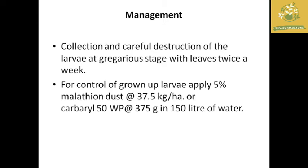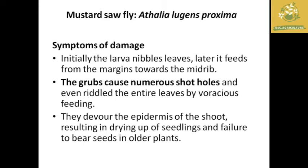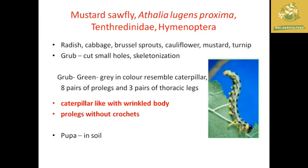The next pest is the mustard sawfly, scientific name Athalia lugens proxima. The symptom of damage: the grub causes numerous shot holes and the entire leaves become riddled by the voracious feeding of these sawfly grubs. The larva is a grub type with a wrinkled body and prolegs without crochets. The pupa pupates in the soil.